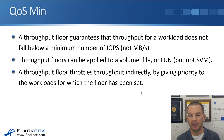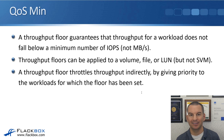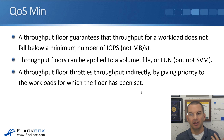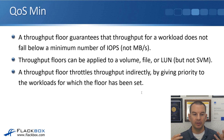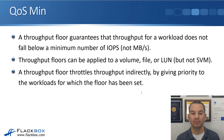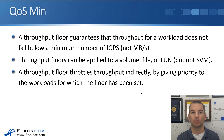A throughput floor throttles throughput indirectly by giving priority to the workloads for which the floor has been set. The ONTAP system cannot tell a workload to send more work — obviously, the workload is going to send whatever it is sending. The way the throughput floor works is that if a workload looks like it's not going to get the resources it needs, ONTAP will limit the other workloads on the system, giving priority to this workload to ensure it gets at least the minimum you've configured.